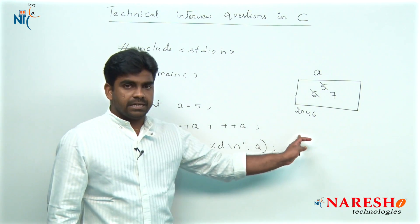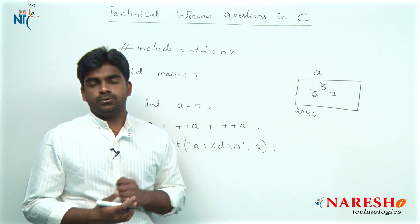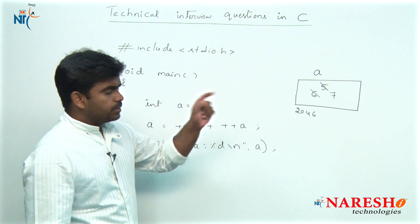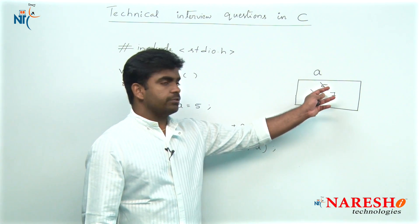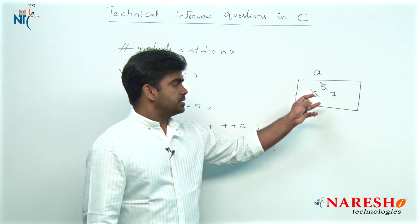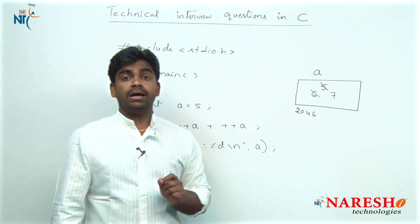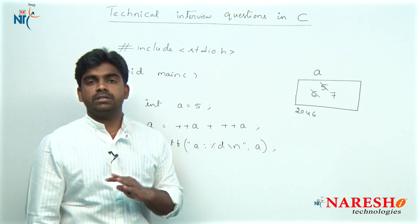Now there are no more increments and decrements, now substitute the values. What is the value of a? It is not 5, it is not 6, because 5 already modified as 6 and 6 already updated to 7. a value is 7, there is no 5, there is no 6.